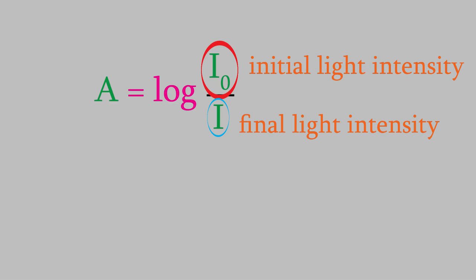In contrast, the percent transmittance is not a logarithm. Instead, the percent transmittance is defined by this equation. Notice that this time, I0 is in the numerator, not the denominator. For that reason, the transmittance is higher the more light comes out of the sample, unlike the absorbance, which is higher the lower I is.